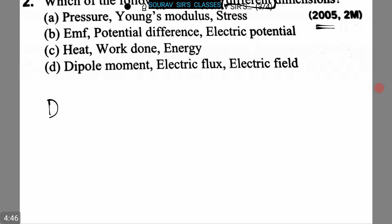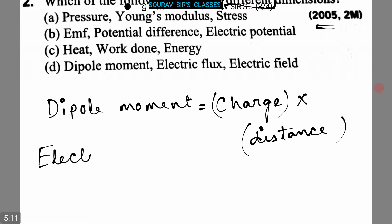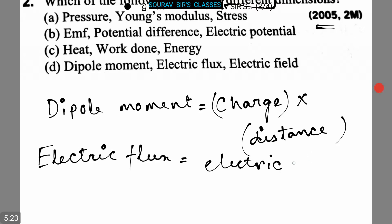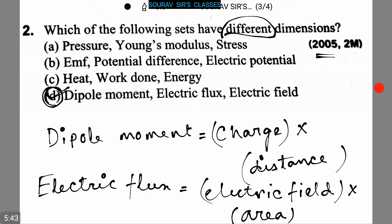Let's start. We can write that dipole moment equals electric field × area. Option D is our correct answer because option D has different sets of dimensions.